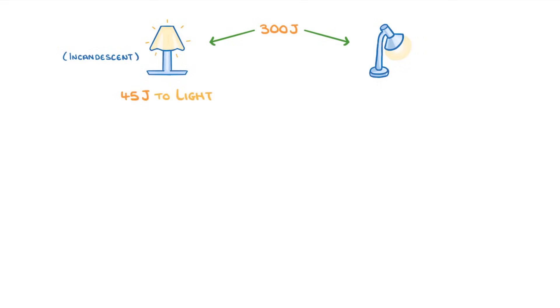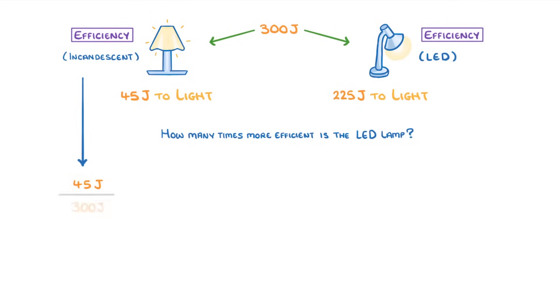Meanwhile, the other has a modern LED bulb which converts 225 joules into light. How many times more efficient is the LED lamp? First, we calculate the efficiency of each bulb. For the incandescent bulb, we do 45 joules divided by 300 joules, which gives an efficiency of 0.15.